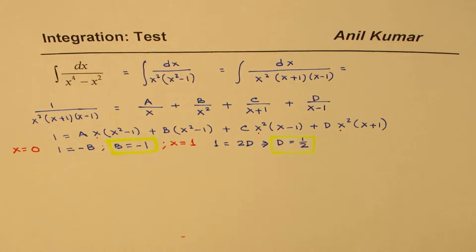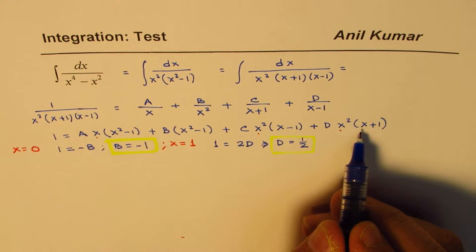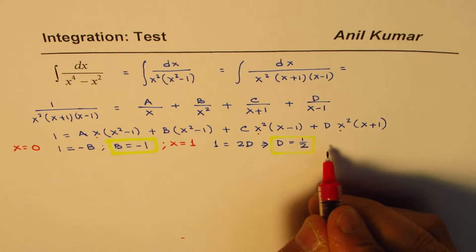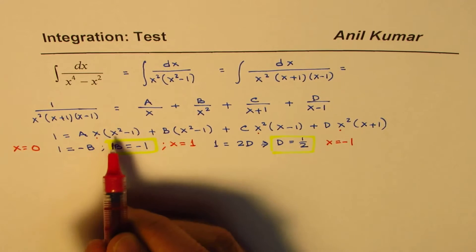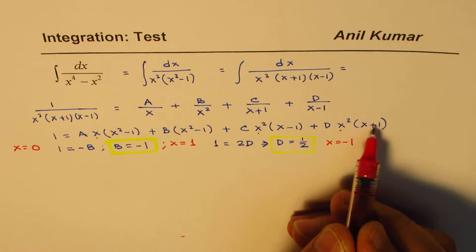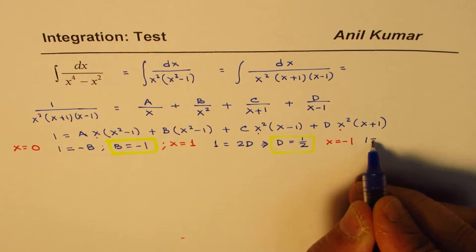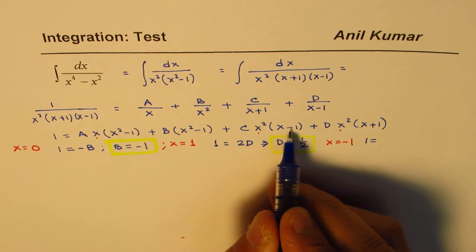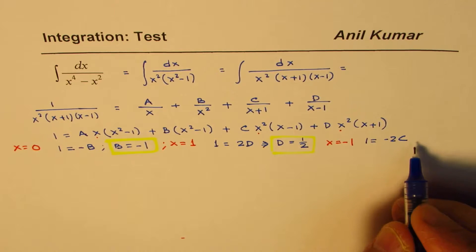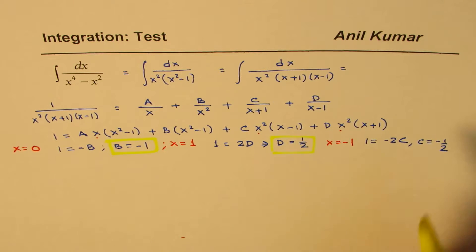We could also substitute x equals minus 1. In that case, the A, B, and D terms become 0. We get 1 equals C times (minus 1) squared times (minus 1 minus 1), which is 1 equals minus 2C. That gives c equals minus one half.